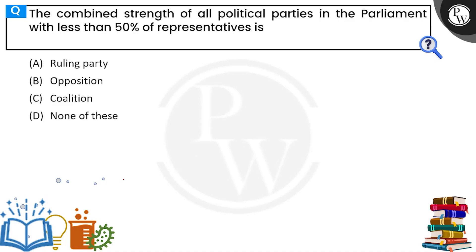The combined strength of all political parties in the parliament is less than 50% of representatives. What do you call this group — ruling party, opposition, coalition, or none of these?